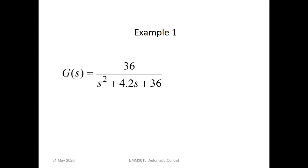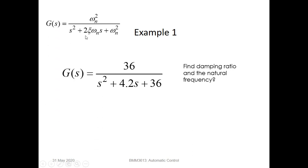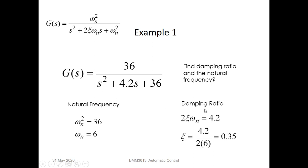Let's look at the first example. Given a transfer function G(s) equals 36 divided by s-squared plus 4.2s plus 36, can you determine the damping ratio and the natural frequency? By using the definition of the transfer function in terms of natural frequency and damping ratio, we can determine that the natural frequency is 6 and the damping ratio equals 0.35.